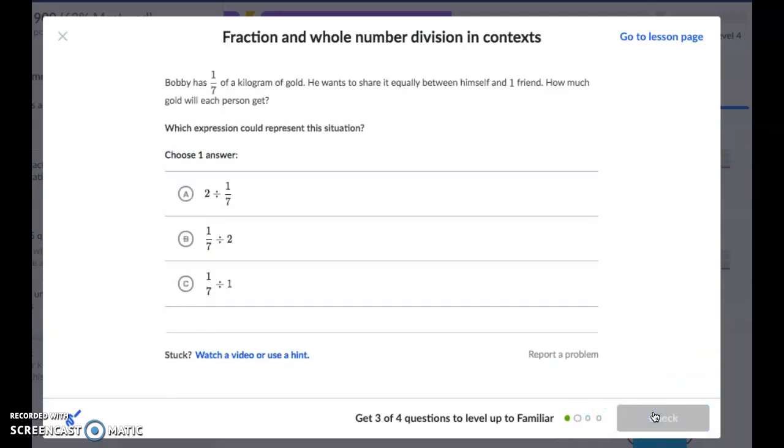Bobby has 1 seventh of a kilogram of gold. He wants to share it equally between himself and one friend. How much gold will each person get? The thing being split up is the gold, so our 1 seventh is going to be first.